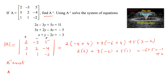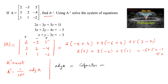We know that A inverse equals 1 over the determinant times the adjoint of matrix A. The adjoint of a matrix is equal to the transpose of the cofactor matrix. So let us find the cofactor matrix using the shortcut method.